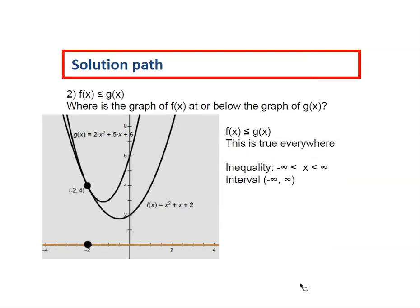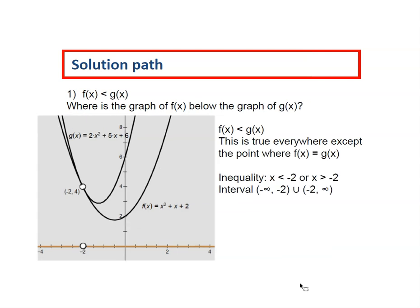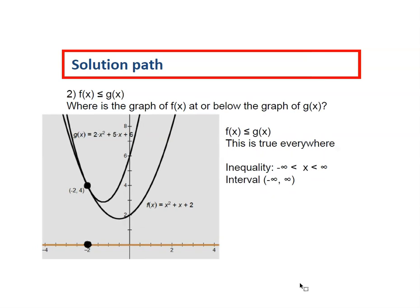On the next question, where is f of x less than or equal to g of x? We want to know where the graph of f is at or below the graph of g of x. This is true everywhere. When we fill in that dot, we see that the graph of f of x is always at or below g of x. So our inequality notation is negative infinity is less than x is less than infinity and our interval notation is negative infinity to infinity and everything is shaded. Notice before, the only thing that isn't shaded is x equals negative 2, but here everything is shaded.